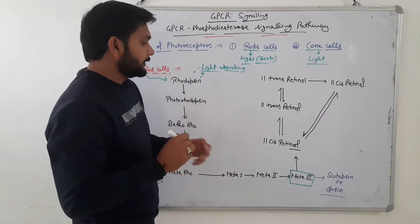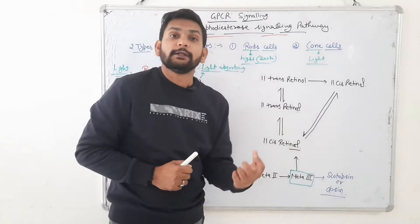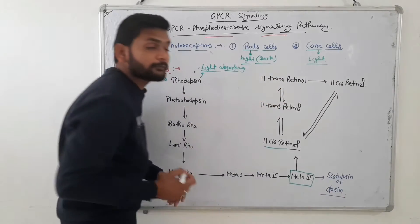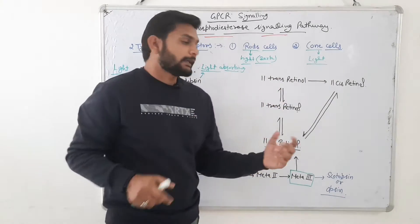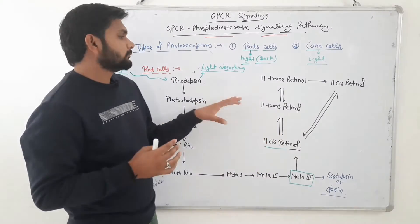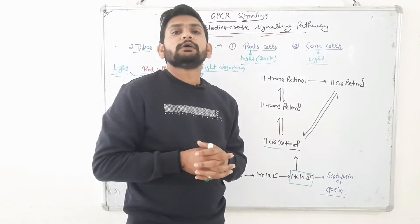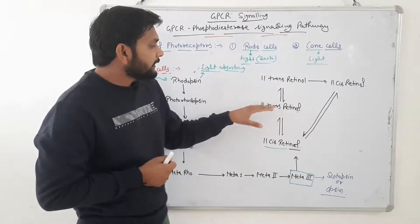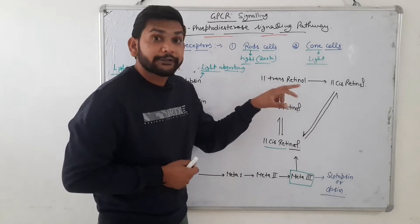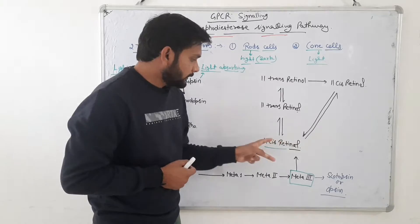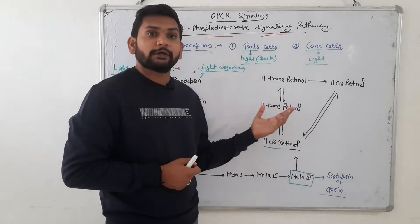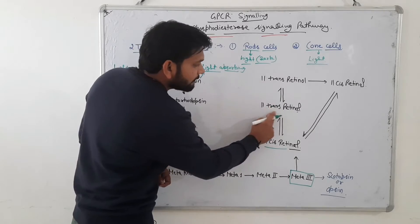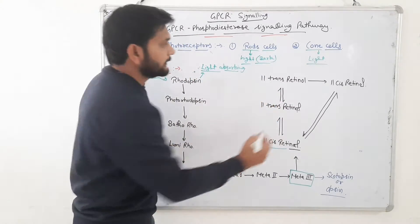Then meta-3 rhodopsin converts into 11-cis-retinal along with an opsin (or scotopsin) protein. After this step, 11-cis-retinal can again activate to form 11-trans-retinal. This conversion between 11-cis-retinal and 11-trans-retinal is a reversible process.